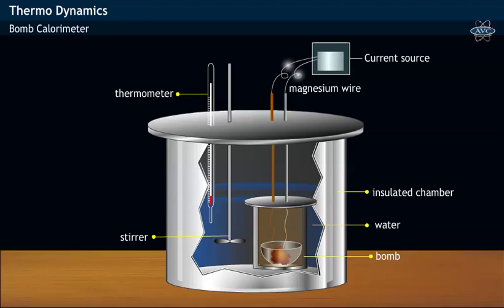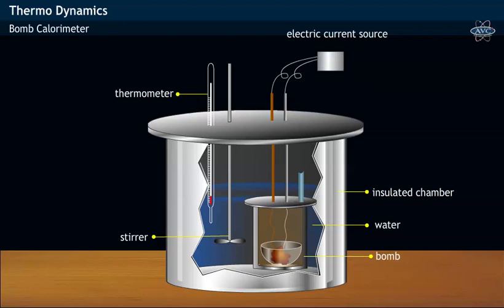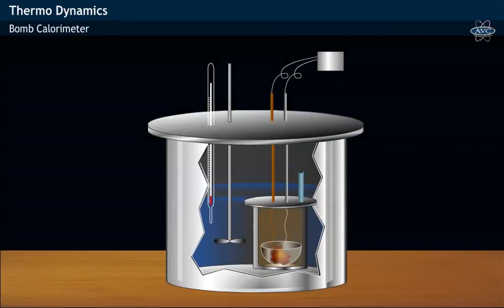This provides electric current externally. An arrangement is made externally to allow oxygen gas to enter into the bomb vessel. Let us perform an experiment using a bomb calorimeter.